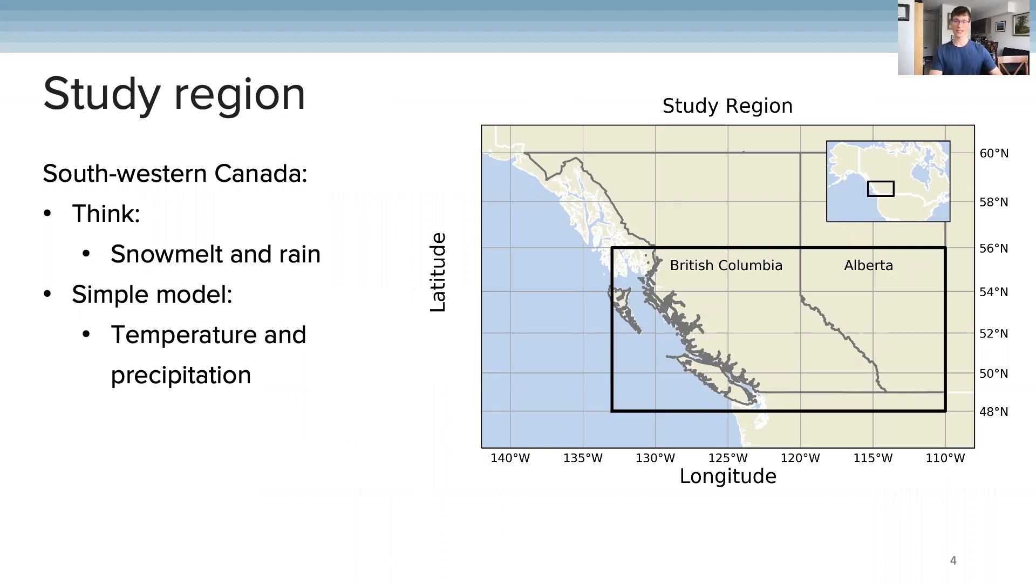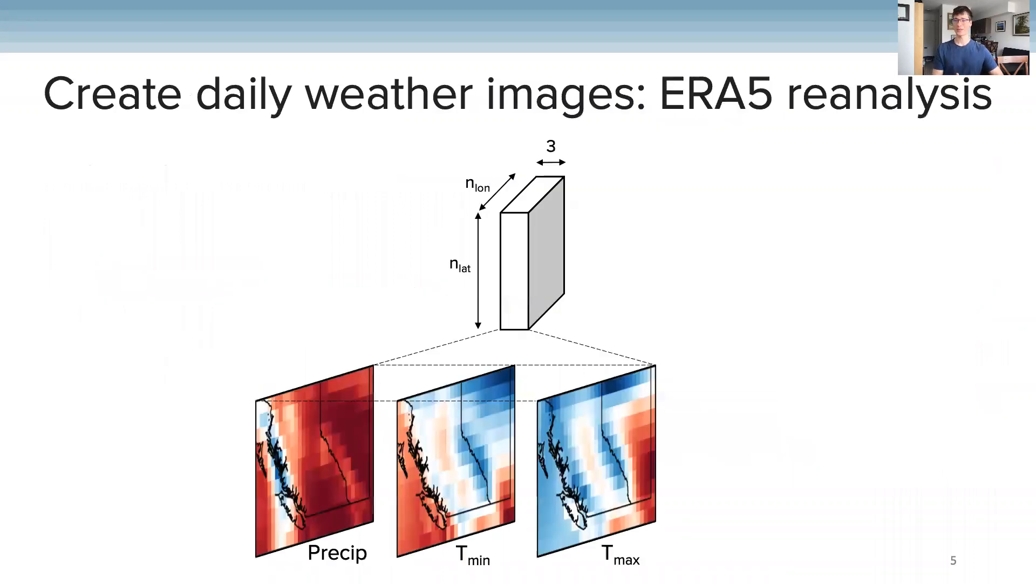To build a relatively simple model, we use temperature and precipitation as our inputs. We structure each day of input to the model as what I call a weather image. Each image has three channels: maximum temperature, minimum temperature, and precipitation.